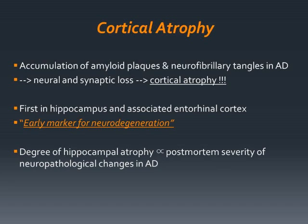Simply speaking, cortical atrophy typically occurs first in the hippocampus and associated entorhinal cortex prior to further progression, and it is considered to be an early marker of neurodegeneration. Furthermore, the degree of hippocampal atrophy on antemortem MRI has been demonstrated to correlate with the postmortem severity of neuropathologic changes in Alzheimer's disease. In the following section, we will discuss specific atrophy patterns and atrophy scales employed for quantification.